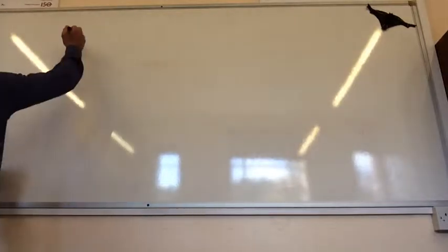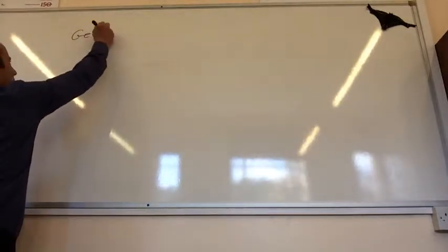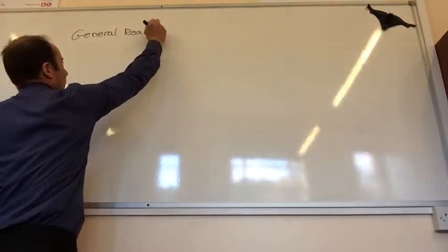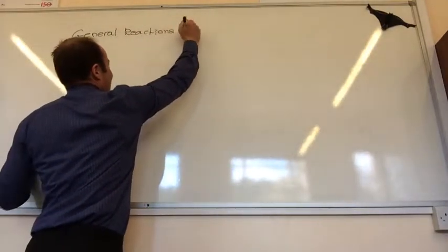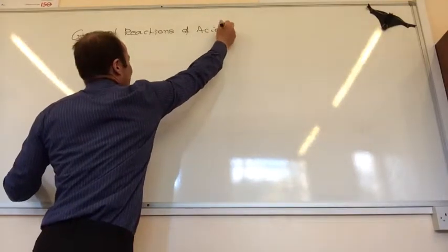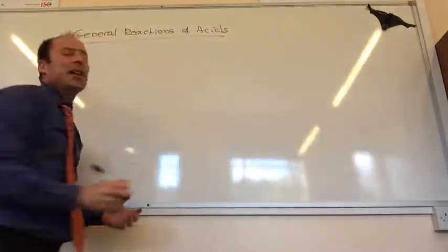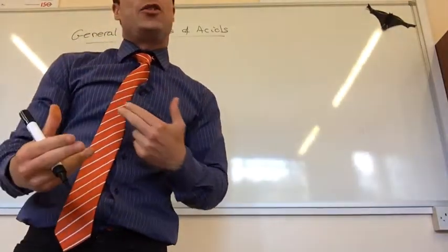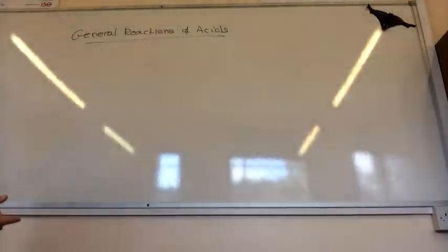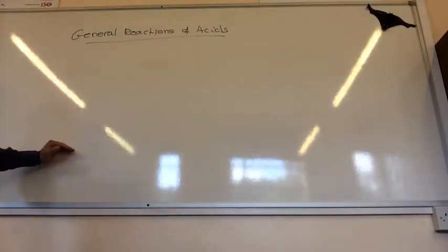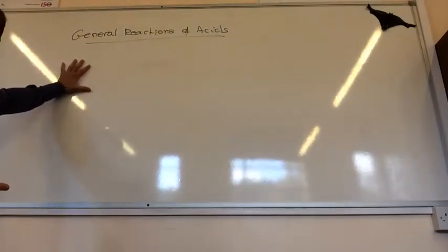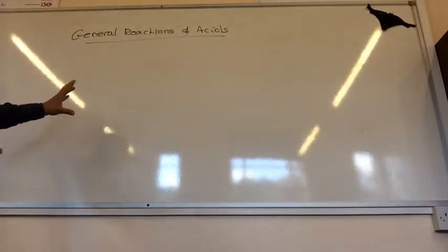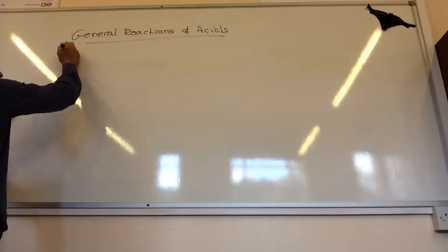There are some general reactions of acids that you need to know. There are actually three that we're going to look at in this topic, but I'm going to give you a fourth one as well, which you're going to look at when you do redox chemistry. But I want to put all four up. The first three are the ones that we need to know for this topic. So we'll do general ones. You should remember this from GCSE.